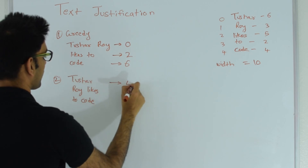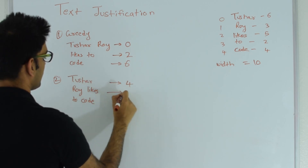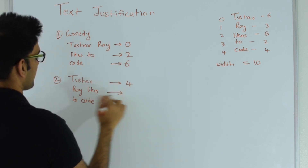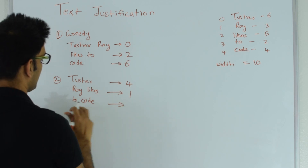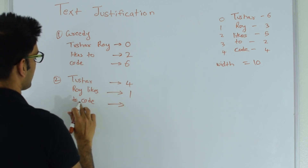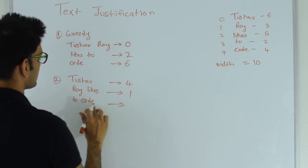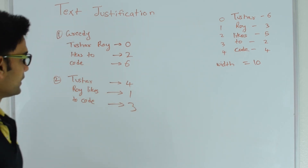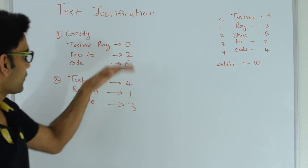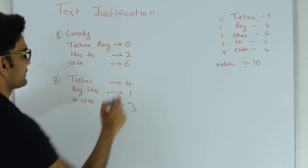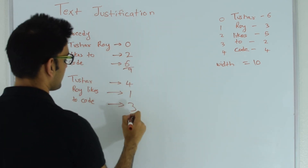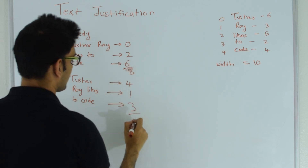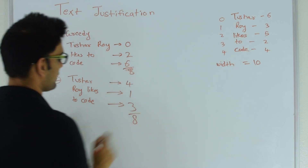Looking at the alternate arrangement: the first line has 4 empty spaces, the second line has 1 empty space, and the third line has 3 empty spaces. If we add up the empty spaces: for the greedy arrangement it's 0+2+6=8, and for the alternate arrangement it's also 4+1+3=8. So just summing empty spaces doesn't help — both arrangements have the same total.